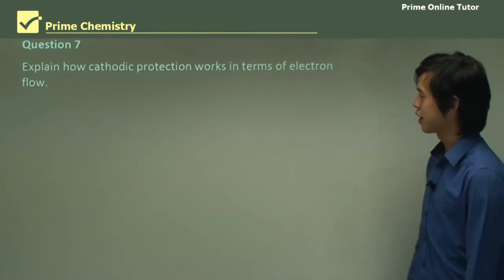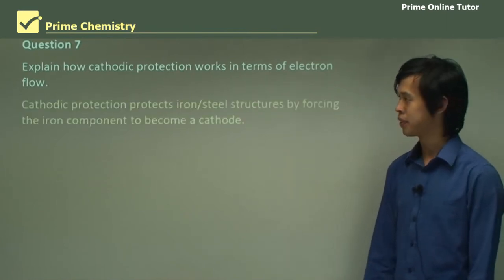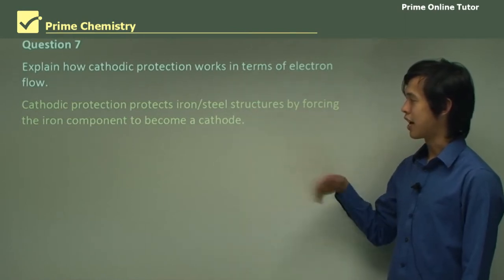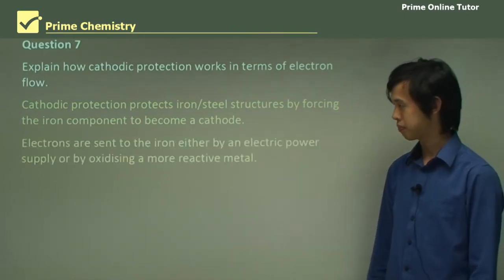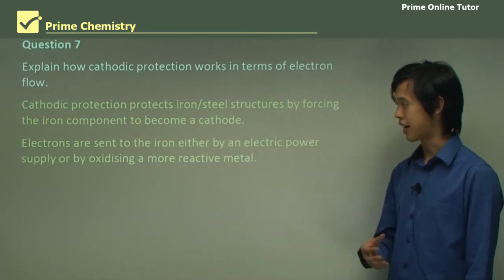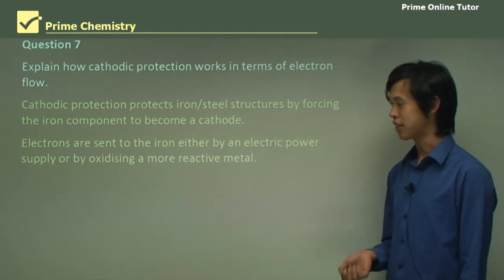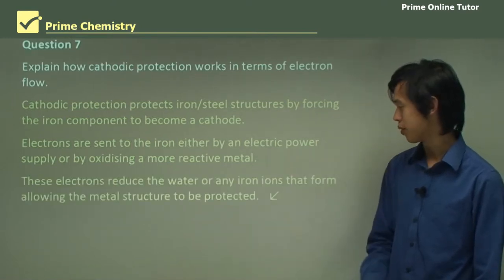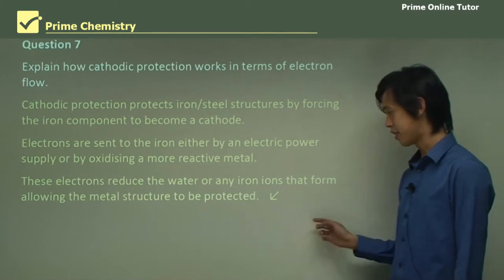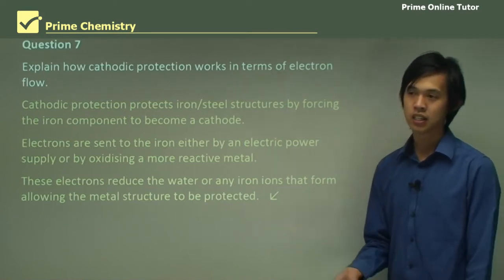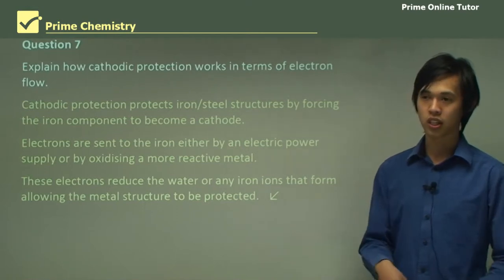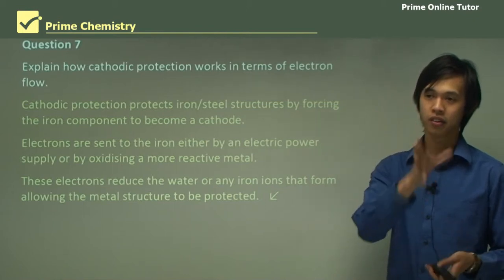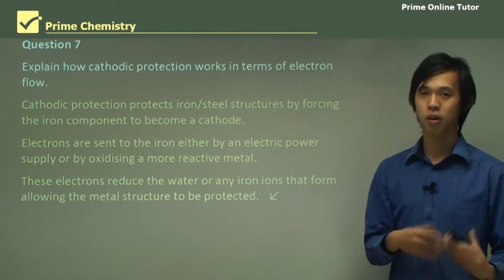Explain how cathodic protection works in terms of electron flow. Cathodic protection protects iron and steel structures by forcing the iron component to become a cathode. Electrons are sent to the iron either by an electric power supply or by oxidizing a more reactive material. These electrons reduce the water or any ferrous ions that form, allowing the metal structure to be protected — preferentially reducing water or iron ions, stopping the iron structure from oxidizing instead.